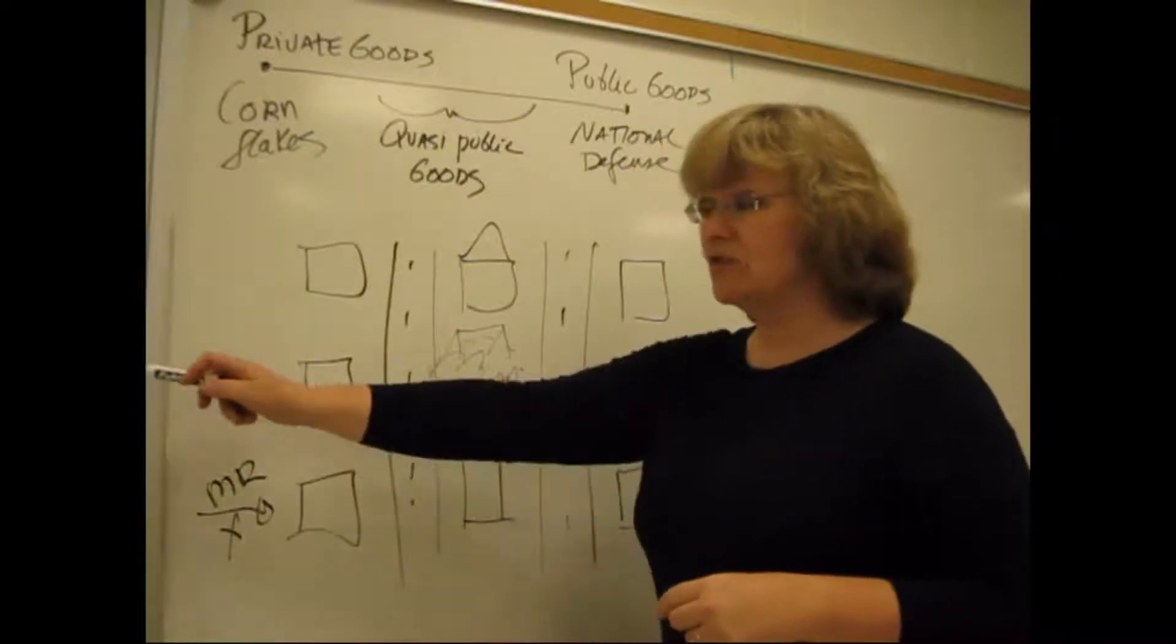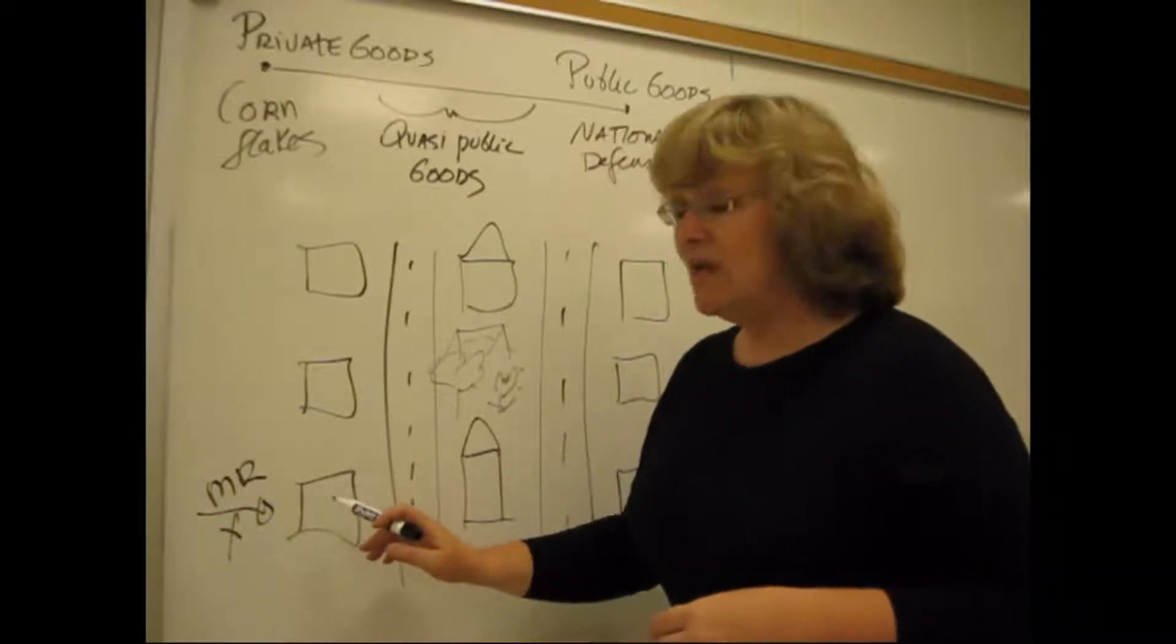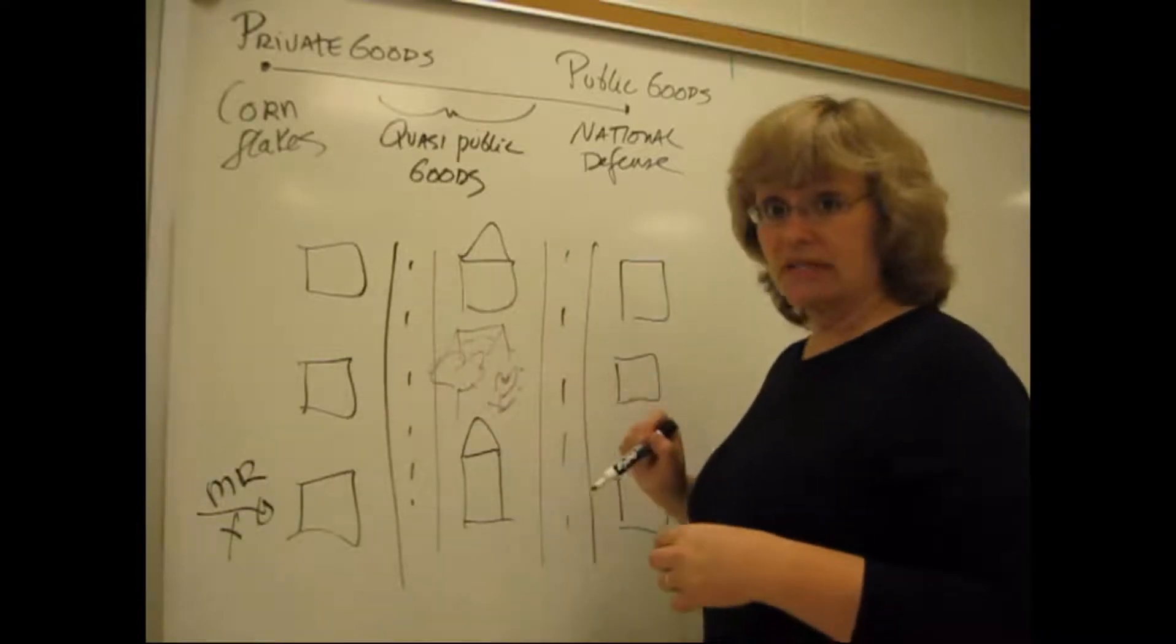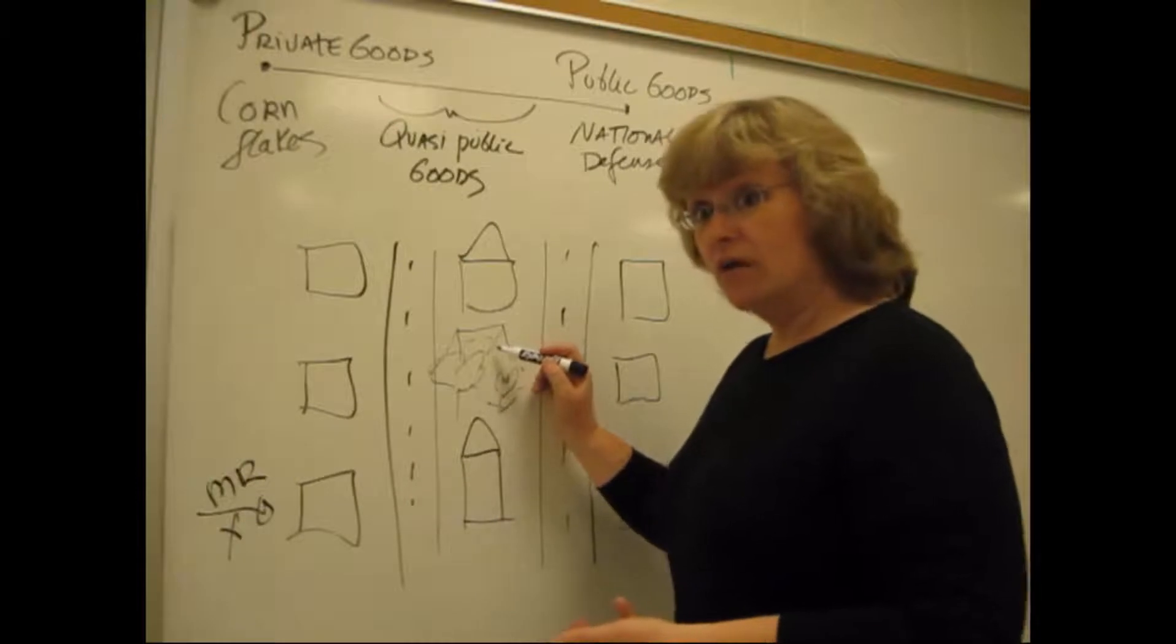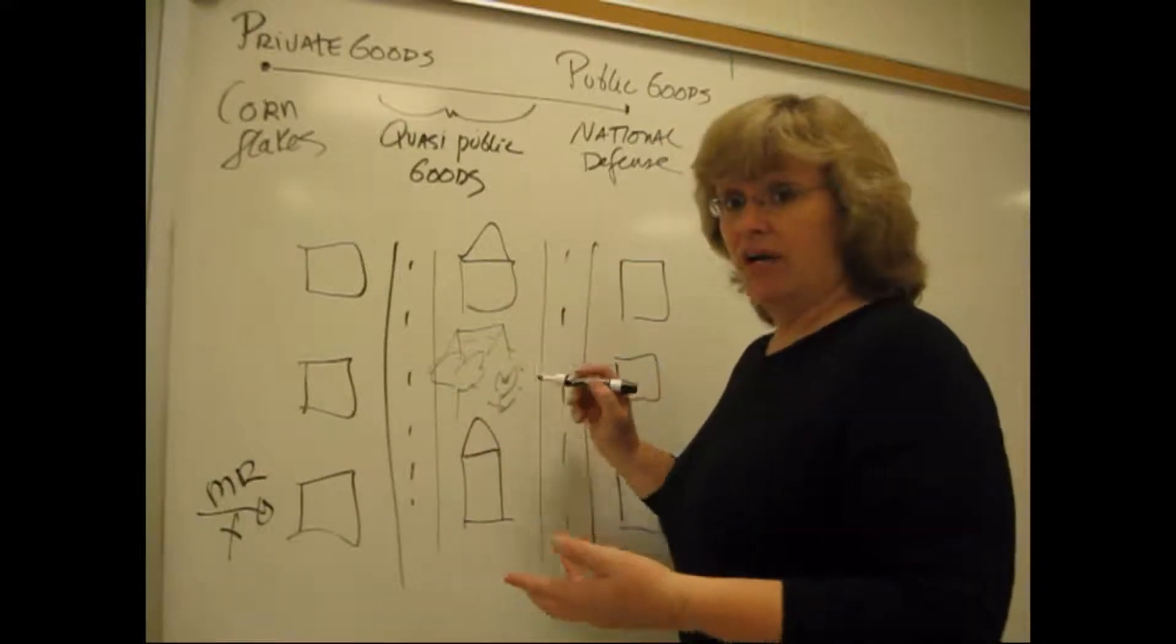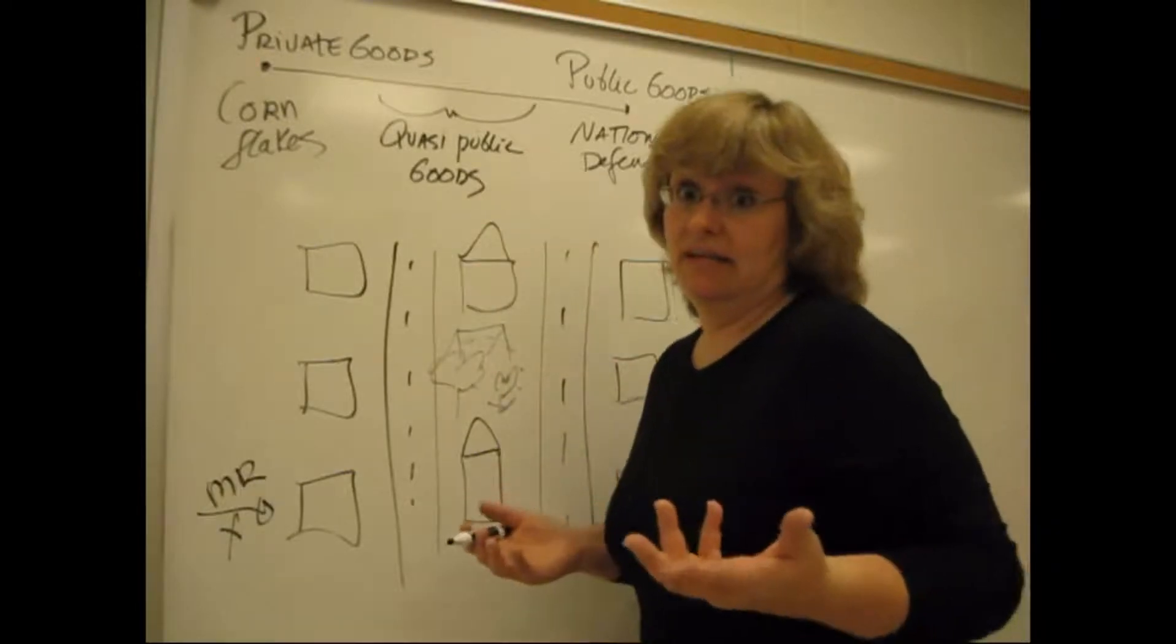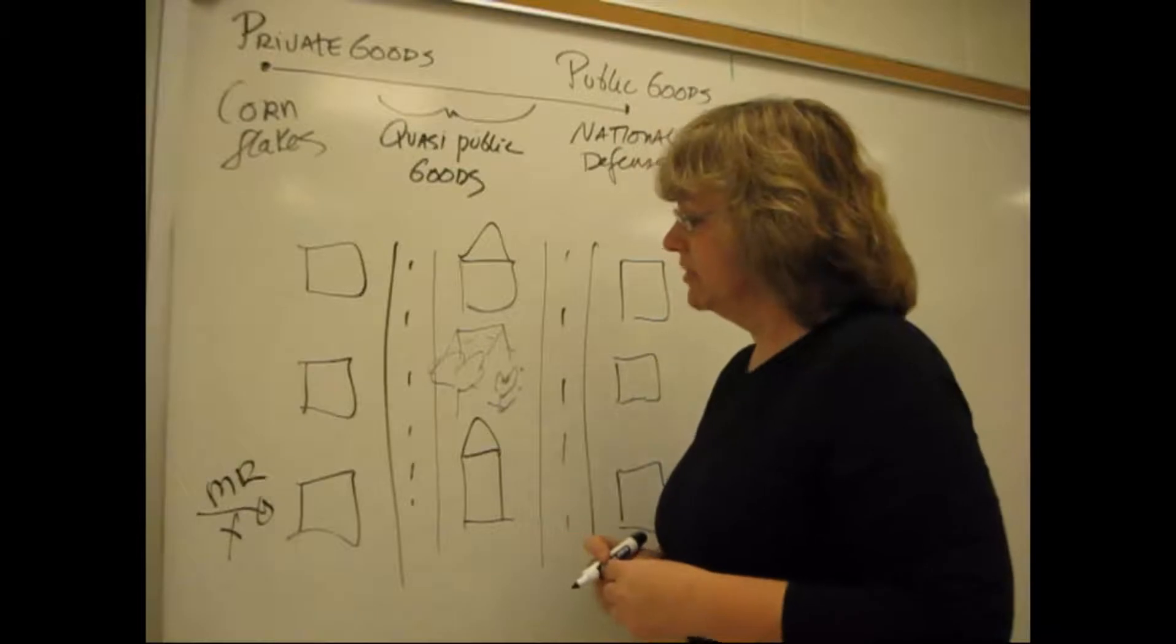You can't exclude him. Non-excludability was one of our characteristics here. You can't exclude him from those benefits. His property values are going to go up just like everyone else's are. He enjoys the benefits of looking at the park along with everyone else. He can look at the park and enjoy it just like everyone else can at the same time. This is that non-rivalry characteristic we were talking about a little bit ago.